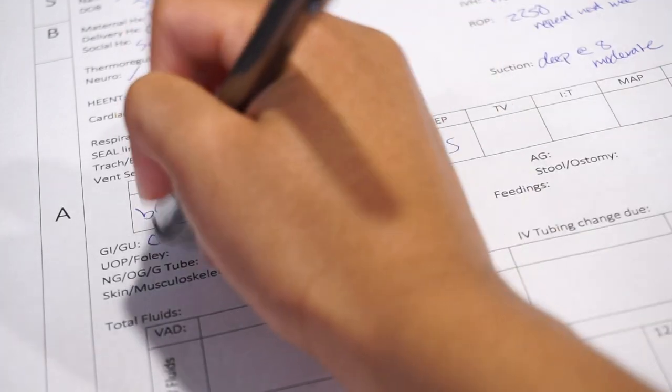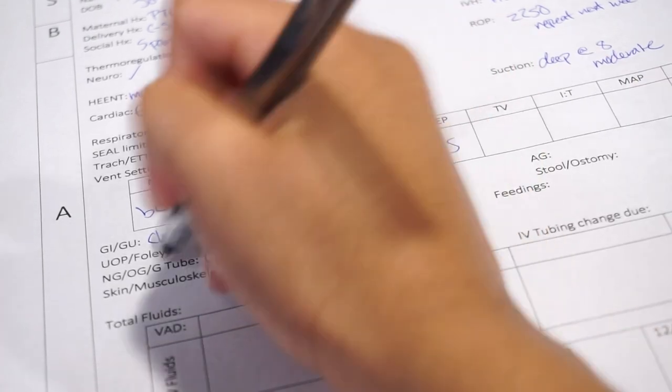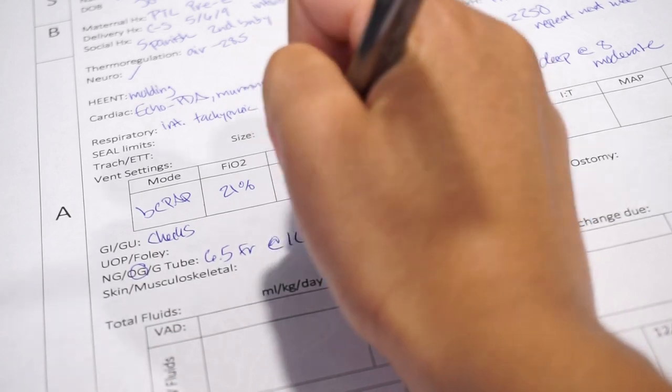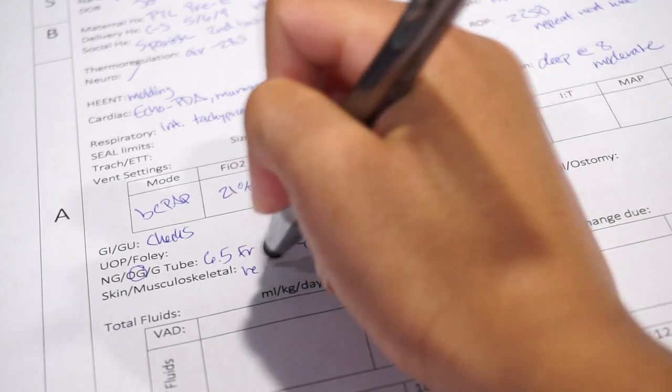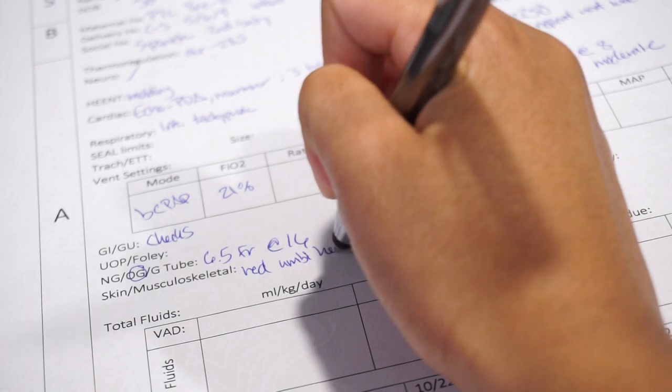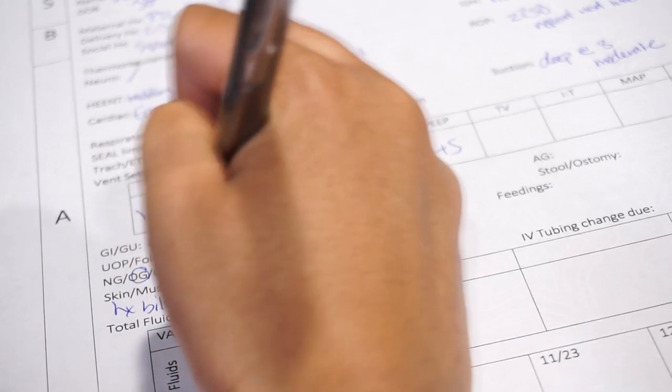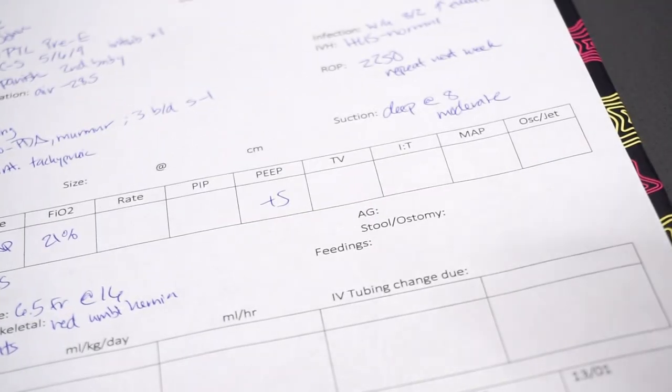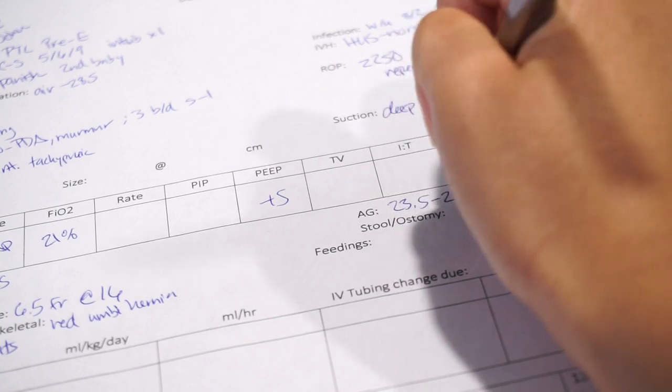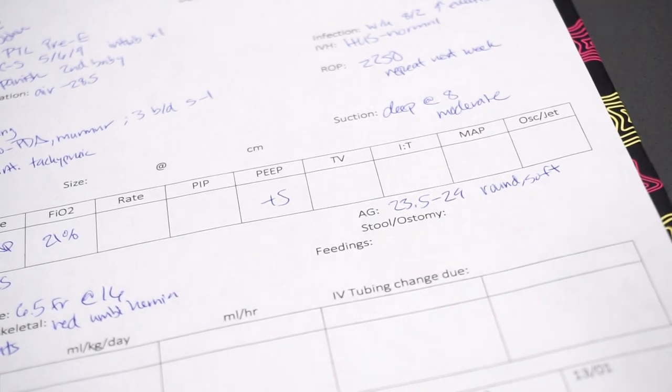GI/GU, he is diaper checks. And he does have a 6.5 French OG tube. And that's at 16. As far as skin, he does also have a reducible umbilical hernia. And he has a history of being on phototherapy. But that was discontinued and resolved. Abdominal girths for me were 23.5 to 24. His belly is a little bit round, but it's soft. And so he hadn't stool for the last two days, but for his last care time, he finally did stool a good bit.